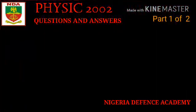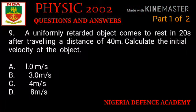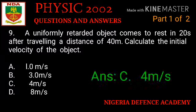Question number nine: a uniformly retarded object comes to rest in 20 seconds after traveling a distance of 40 meters. Calculate the initial velocity of the object. Option A: 10.0 m/s. Option B: 3.0 m/s. Option C: 4 m/s. Option D: 8 m/s. The right answer is option C — 4 meters per second.